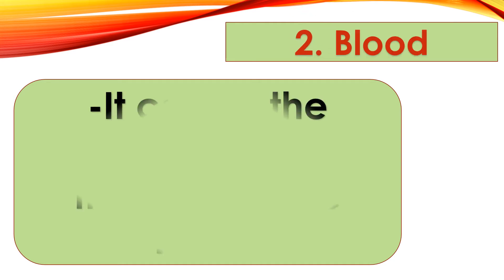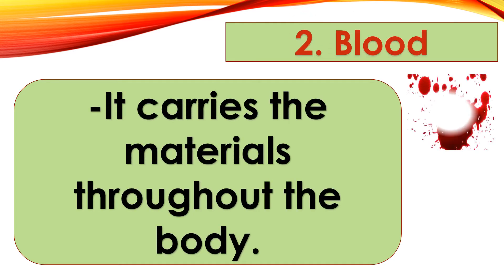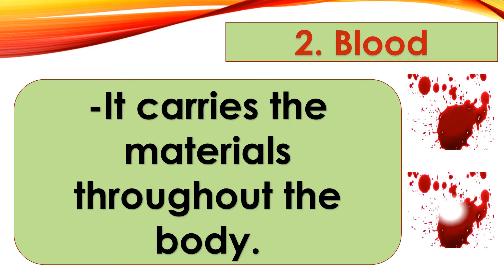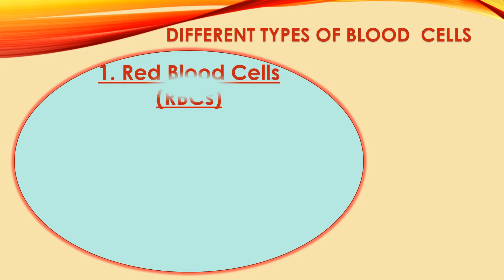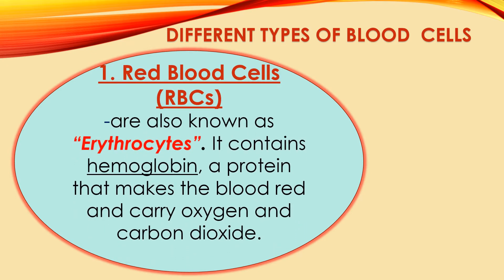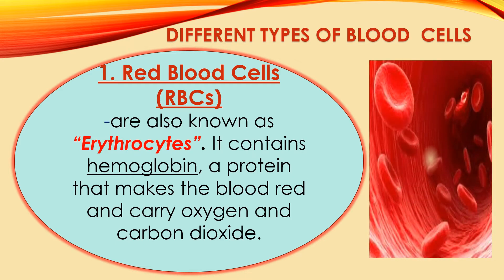The second part of the circulatory system is blood. Blood carries materials throughout the body. Number one: red blood cells. Red blood cells are the blood cells that carry oxygen. They contain hemoglobin, which permits them to transport oxygen and carbon dioxide.